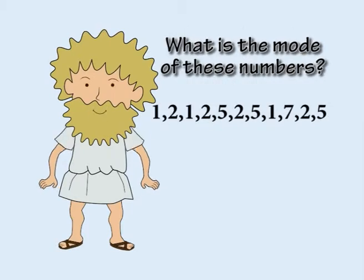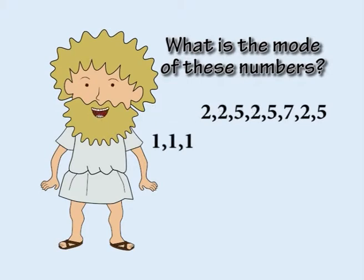For example, to find the mode of these numbers, let's group them together in the same way we would group coins together that have the same denomination. So all the ones go together, all the twos go together.